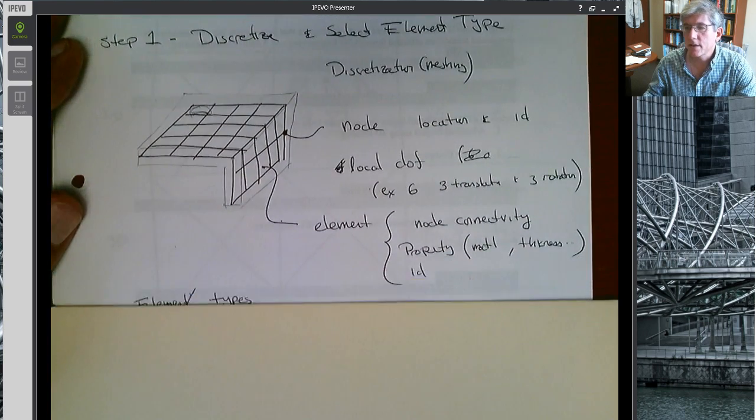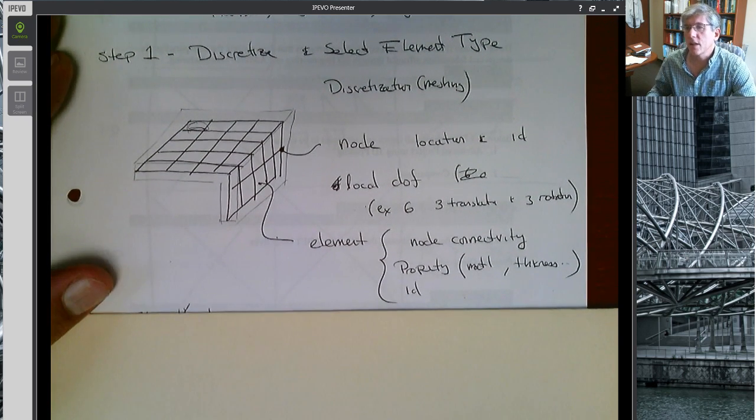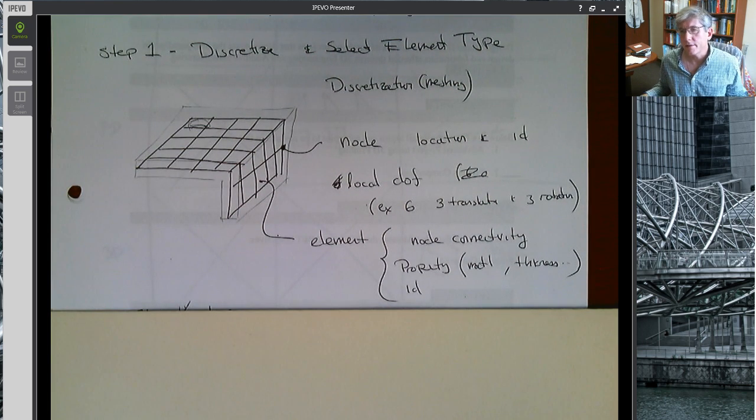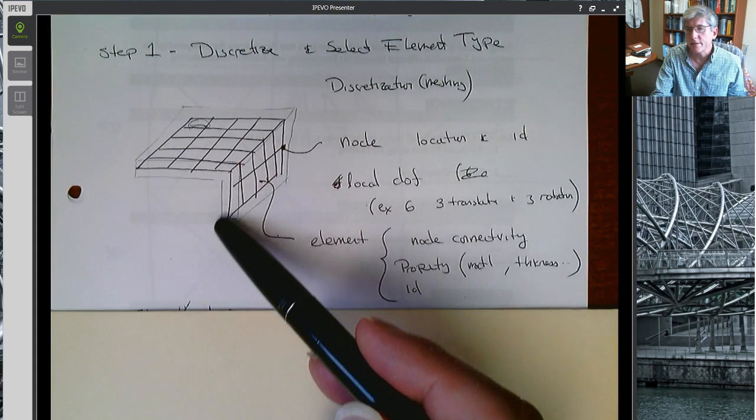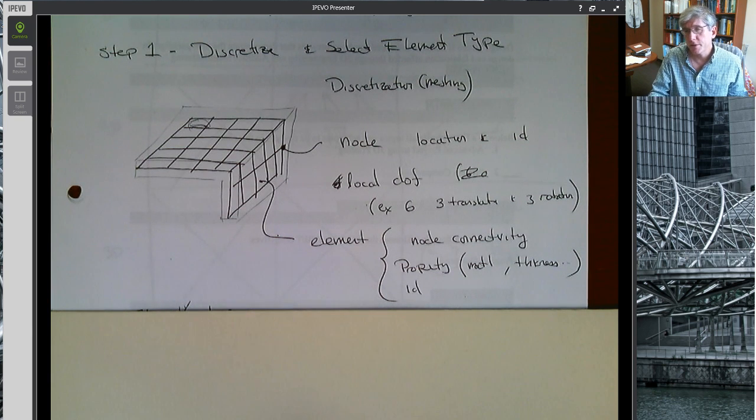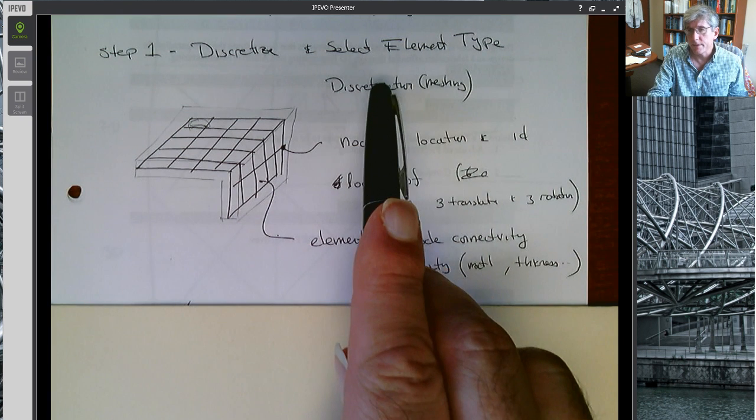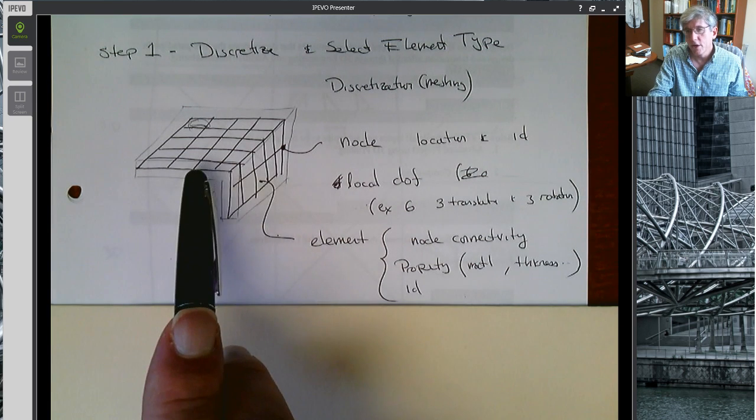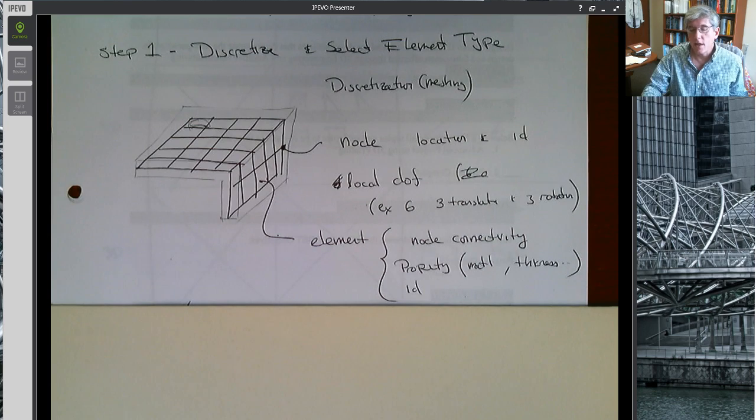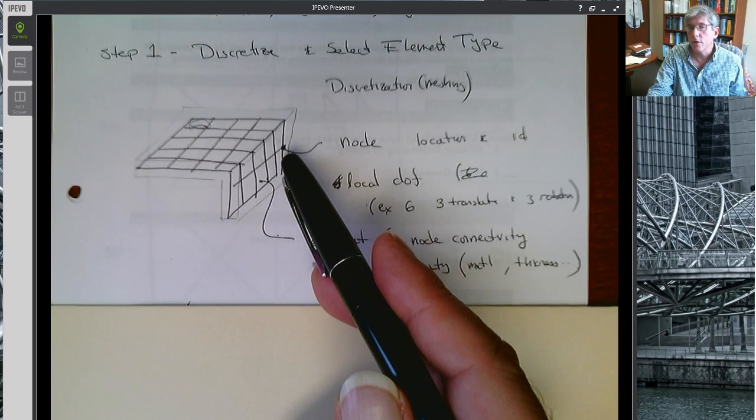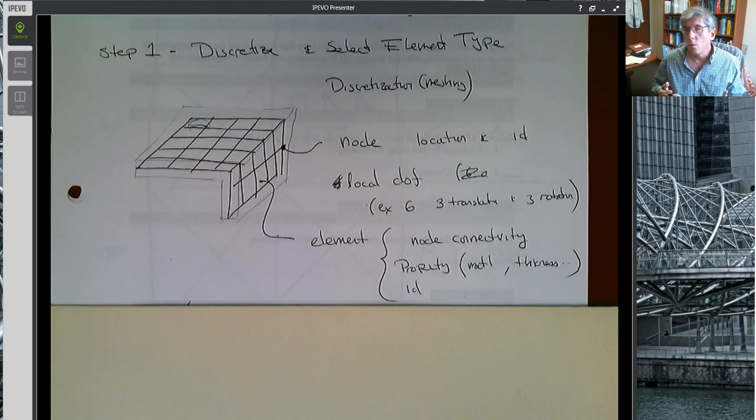The first step as discussed in the textbook is to discretize and select the element type. This is actually a really significant amount of effort in developing a finite element model, basically breaking it up into its elements. For example, imagine there's this sort of solid angle bracket. We have to, in this particular case, select the element type to be these shell elements, which are two-dimensional elements that are supposed to idealize bending in three dimensions like a thin shell.